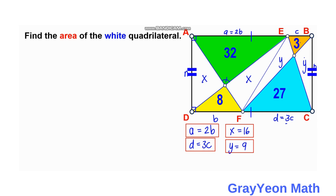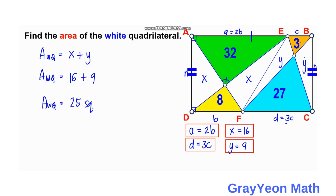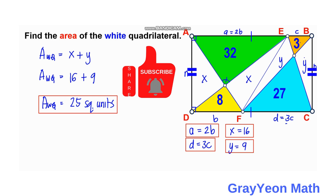For the final step, the white quadrilateral is composed of the two areas x and y. So the area of W equals x + y. Substituting x = 16 and y = 9, the area of W equals 25 square units, and that is our answer. Thank you for watching — please like the video and subscribe to the channel and hit the bell icon for more math videos like this.